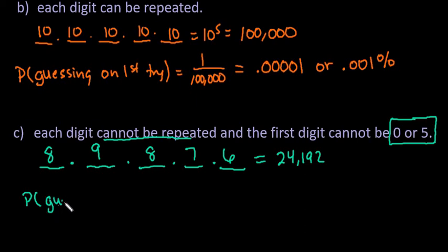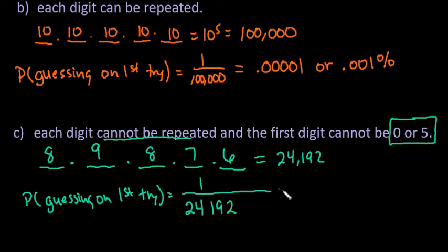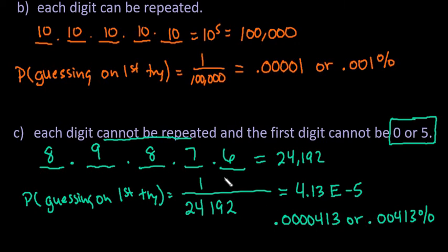So our probability of guessing on the first try is going to be 1 over 24,192. And this one when I plugged it into my calculator I got the e notation, the scientific notation again. For this one I ended up with 4.13 e negative 5. And again if you move it over five places you would end up with 0.0000413 or you could say 0.00413 percent. So either of those are valid answers and ways of writing it. You can see that for all of these it's very unlikely to happen for somebody to guess your code. The more numbers you have and the more possibilities you have the less likely it is for somebody to be able to guess your password or your access code. As always thanks for watching. If you have any questions please let me know. If there are additional topics you would like me to cover please let me know that as well.